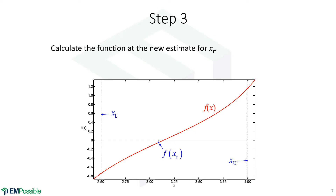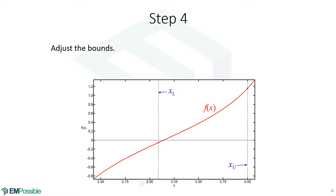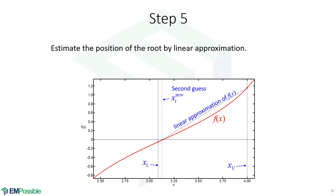We made a guess based on where that line crosses zero, and we evaluate the function at that new guess for the root. At this point, we adjust the bounds just like we did for the bisection method. We look at the sign of the function at this new root and also at either the lower or upper bound. In this case, we're moving the lower bound up to our new guess. Then we connect this new point to the upper bound with a straight line, giving us a better guess, closing in very fast. This requires much fewer iterations than the bisection method for functions close to linear.